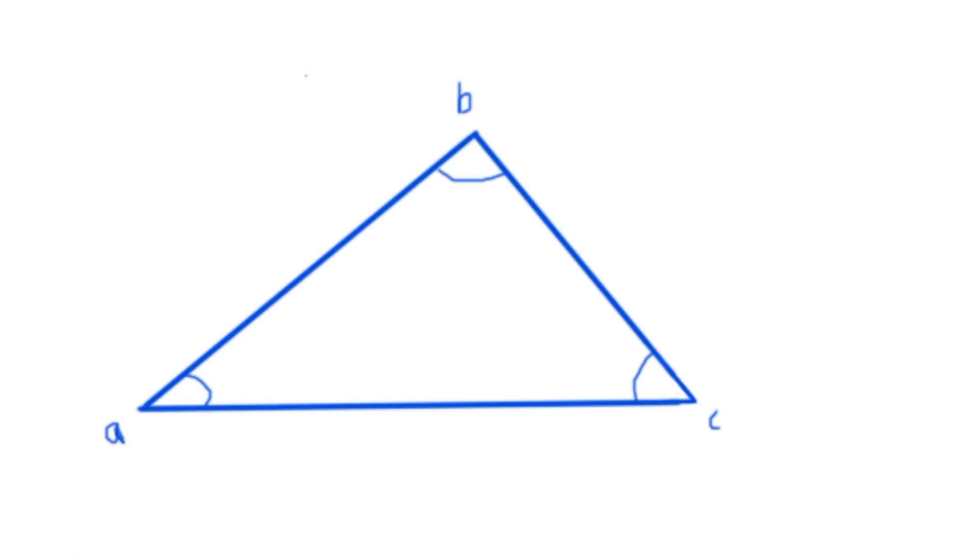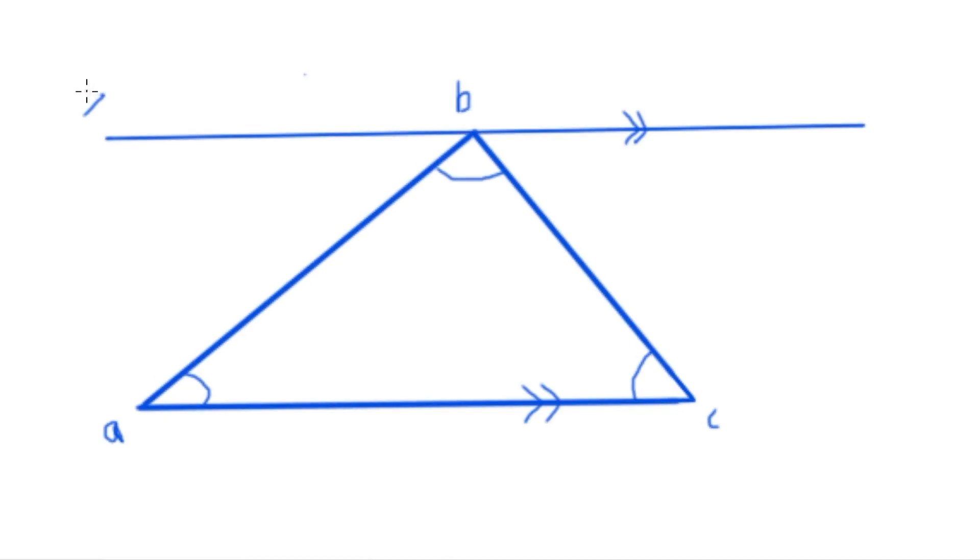We'll start off by looking at an irregular triangle, labelled A, B and C, and we'll first draw a line through ABC, parallel to AC, and label it XY.